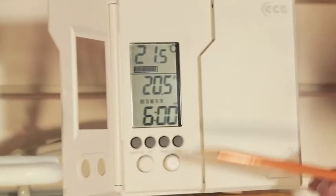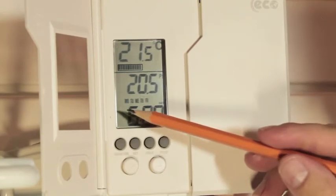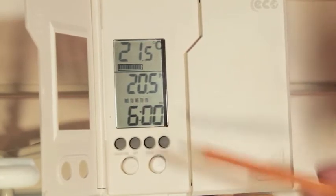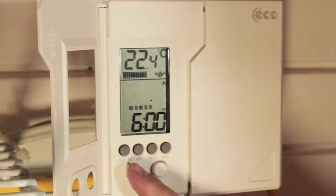To begin entering the program to the thermostat, press PROG once. The symbol for Program 1 will appear on screen, as well as all the letters for the days of the week. To adjust the temperature of Program 1, you can now press the arrow buttons.